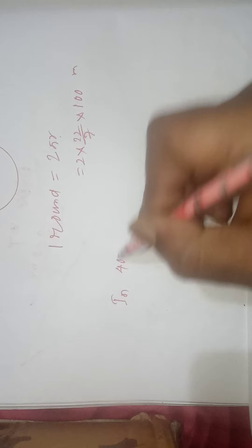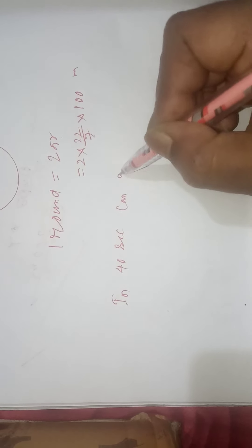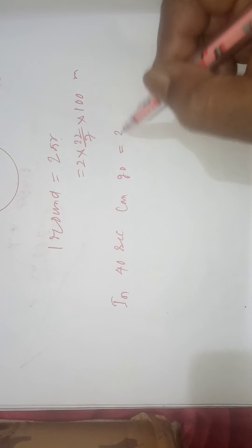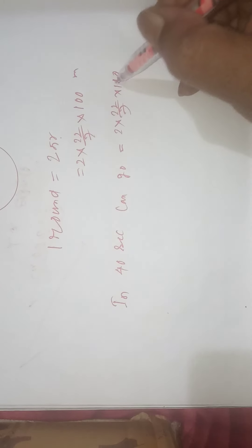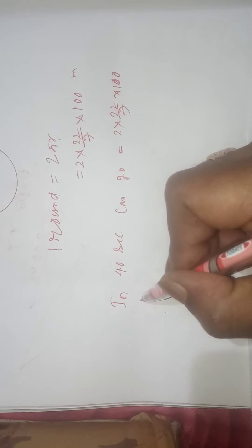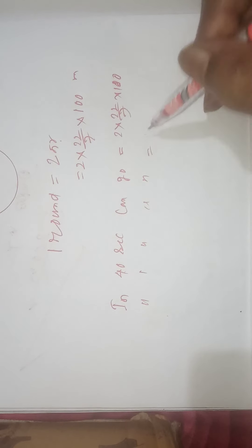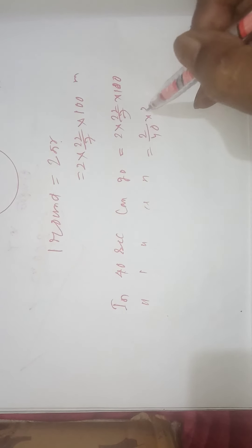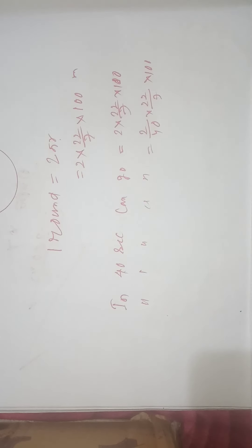Let's apply the unitary method. In 40 seconds, the athlete can go equal to 2 × (22/7) × 100 meters. In one second, the athlete can go 2/40 × (22/7) × 100 meters. Now we are asked: after 2 minutes 20 seconds, what is the distance and displacement?